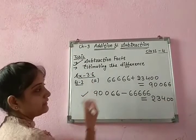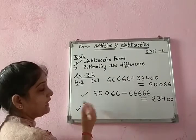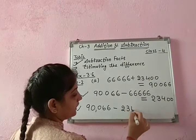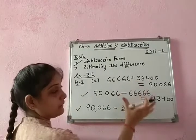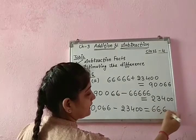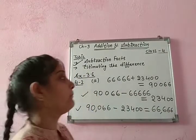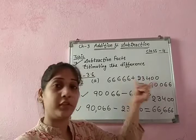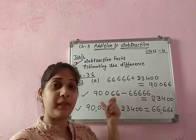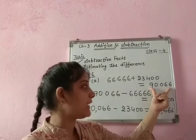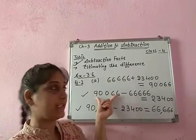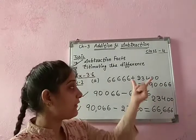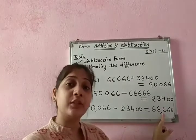This is the first subtraction fact. For the second subtraction fact, from 90,066, if I subtract 23,400, I get the remaining third number, which is 66,666. So when we add two numbers, the sum is the bigger one, and in subtraction, from the bigger we subtract the smaller to get the other number.